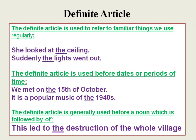We use the definite article before dates or periods of time. 'We met on the 15th of October' — '15th' is in ordinal form, so we use 'THE.' 'It is a popular music of the 1940s' — decades like the 1940s, 1960s, 1980s indicate periods of time, so we use the definite article. The definite article is generally used before a noun followed by 'of.' For example: 'This led to the destruction of the whole village' — 'destruction' is a noun followed by 'of,' so we use 'THE.'